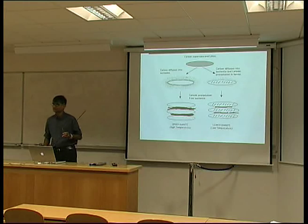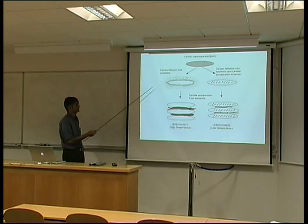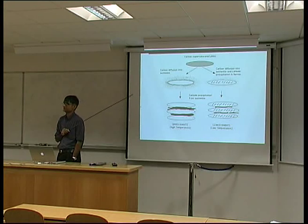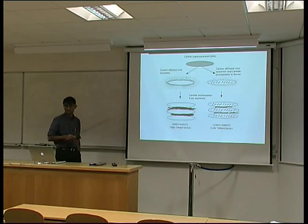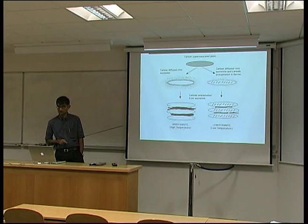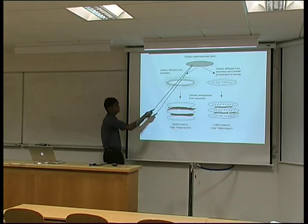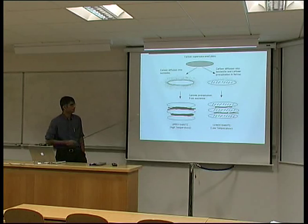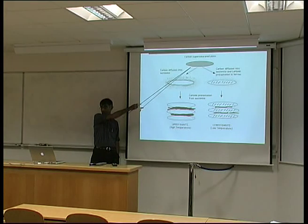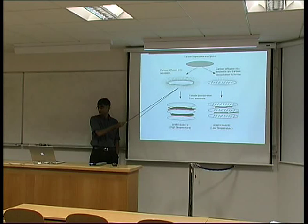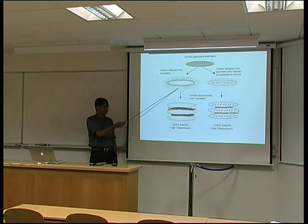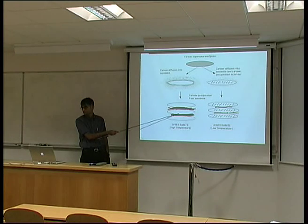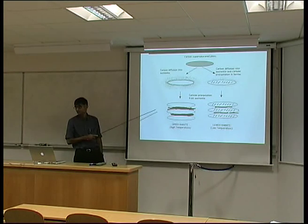Today's talk is about the application of the mechanism of transformation that we've learned about to the design of better metallic alloys. This is a summary of the mechanism: a plate of bainite forms without any diffusion, but shortly afterwards, carbon is partitioned into the remaining austenite. It then precipitates as cementite particles to give us this upper bainite microstructure.